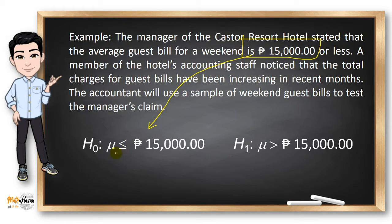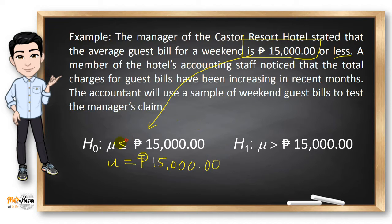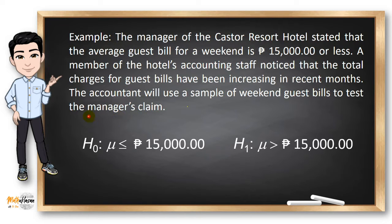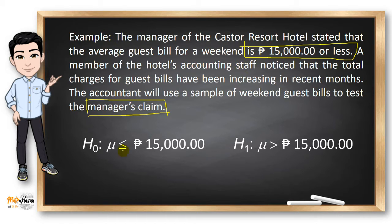As long as you see the equal sign for a particular value, it's always the null hypothesis. That is why some statisticians just write the null hypothesis as equal to. Since less was stated here, I included less than. For some instances, identifying the claim is important. In this case, since the manager is claiming that the average guest bill is less than or equal to 15,000, then the claim is the null hypothesis.